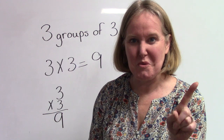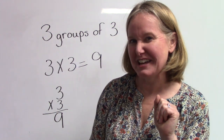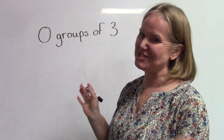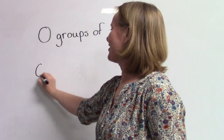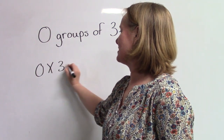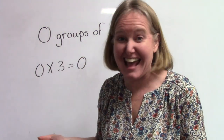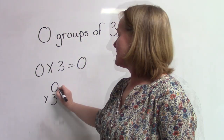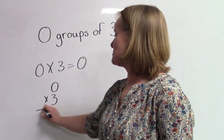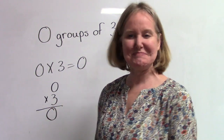I want to try one more — it's kind of a tricky one. What if we don't have any groups of three? Then we don't have anything. Zero groups of three is zero. That was tricky! Zero groups of three equals zero because we didn't have any groups of three at all.